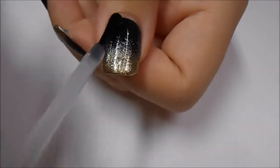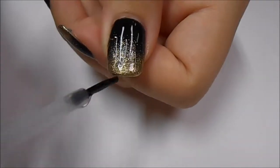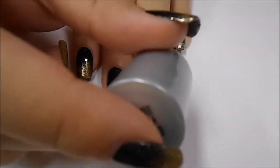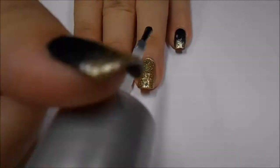And then after everything is completely dry, you're going to want to take a fast drying top coat and run that down all of your nails. You want to make sure to get the edges of your nails to help you to prevent future chipping.